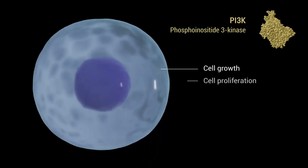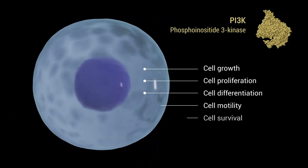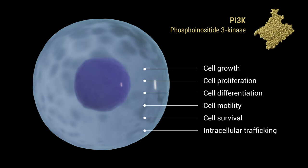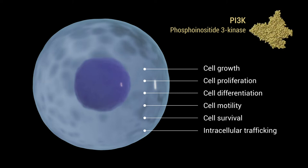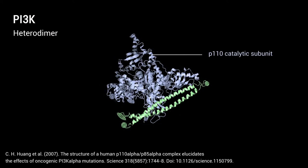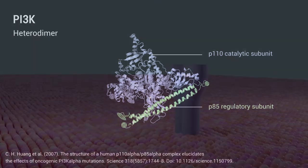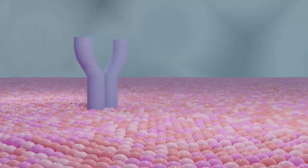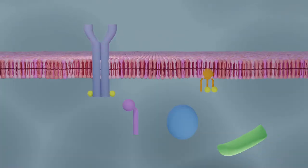PI3 kinases are a family of signaling enzymes which regulate a variety of important cellular functions. They are heterodimers consisting of a P110 catalytic subunit and a P85 regulatory subunit. Normally the P85 subunits bind and stabilize the P110 subunit and inhibit its enzymatic activity.